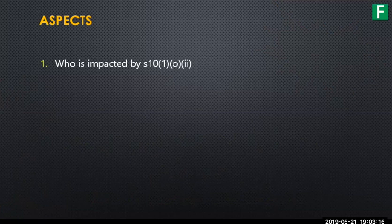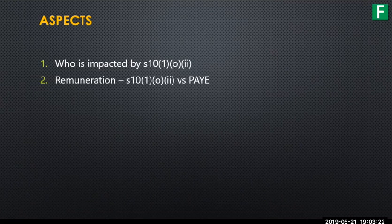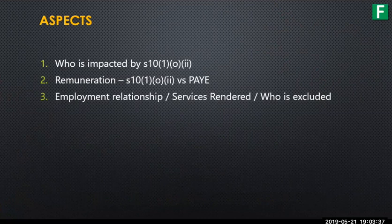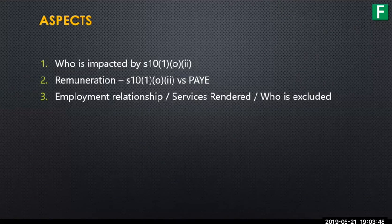We need to understand who's really impacted and who actually qualifies. It's important to look at remuneration, because there's a difference between remuneration for purposes of the exemption and what we use for pay-as-you-earn purposes. We'll also talk about the employment relationship and services rendered requirements, and importantly, who's excluded from this exemption in any event — because if you are one of those people, you couldn't have claimed this exemption and the changes don't impact you.